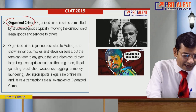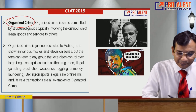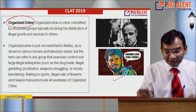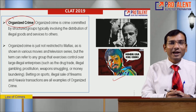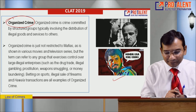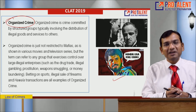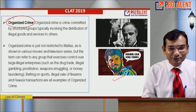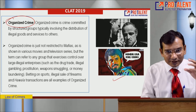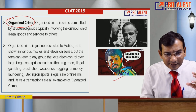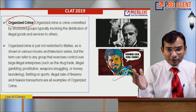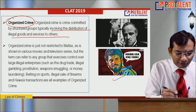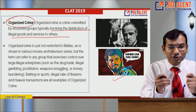The fifth category is organized crime. Organized crime is committed by a structured group, typically involving the distribution of illegal goods or services. It is not just restricted to the mafia as shown in movies and television — organized crime groups manage many illegal enterprises.